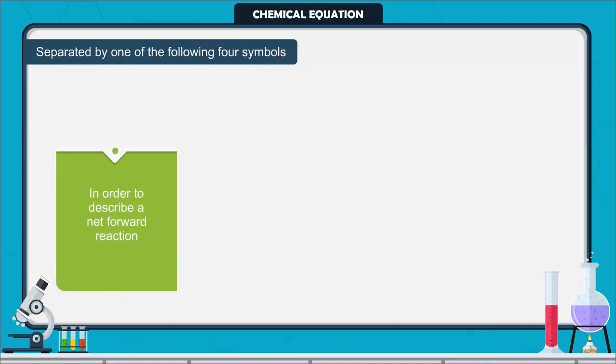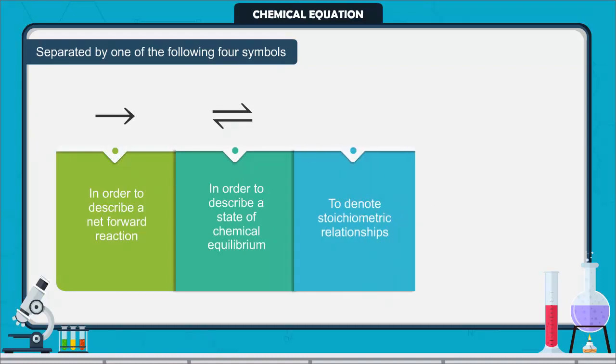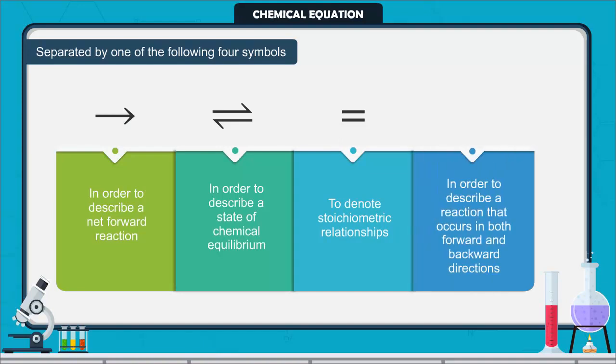In order to describe a net forward reaction, this symbol is used. In order to describe a state of chemical equilibrium, this symbol is used. To denote stoichiometric relationships, this symbol is used. In order to describe a reaction that occurs in both forward and backward directions, this symbol is used.